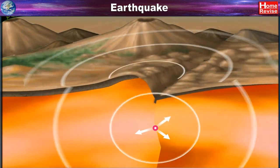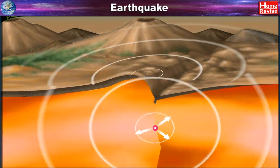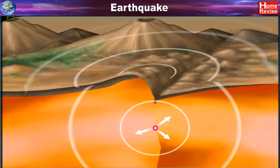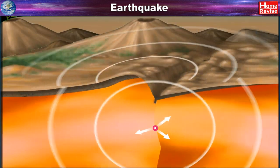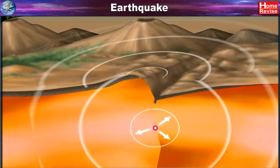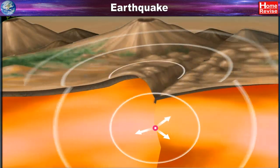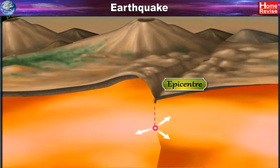From the focus, energy waves radiate in all directions towards the surface. The epicenter of a quake is located on the surface at the point nearest to the focus.